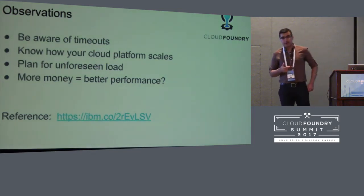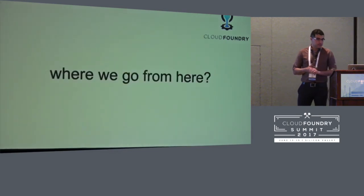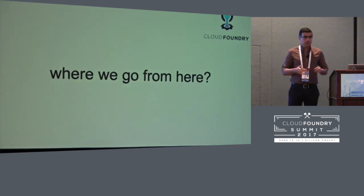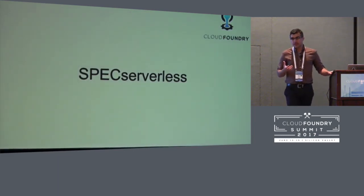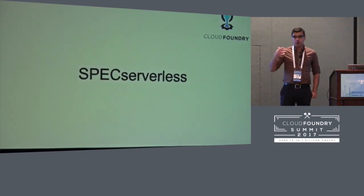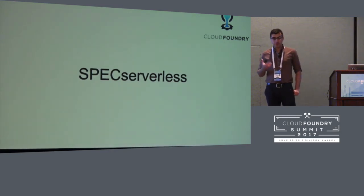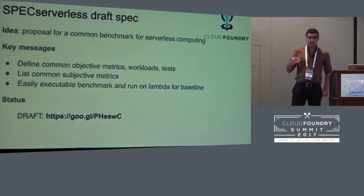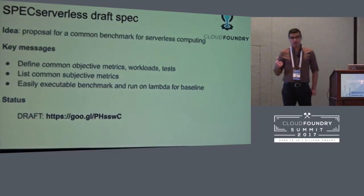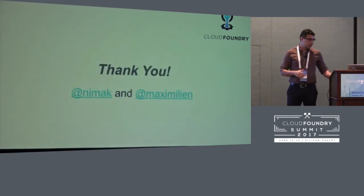There is a blog post we wrote highlighting some of these lessons learned from running these experiments — the link is here if you're interested. The last thing I want to mention is where we want to go from here. We started thinking about something like spec serverless — a bunch of open source tools that you can run against different serverless platforms, collect similar data to what we've reported here, and decide for yourself whether a given serverless platform is the right choice. We've put the proposal out, defined the objectives, metrics, workloads, and tests, and drafted something we're communicating internally within IBM and Pivotal to eventually make publicly available.